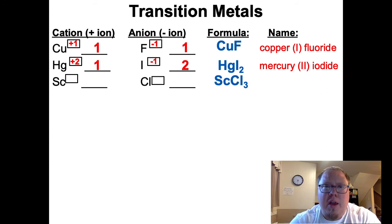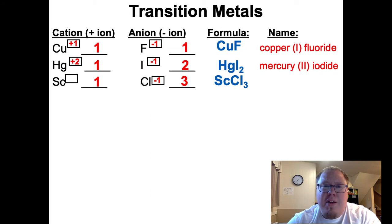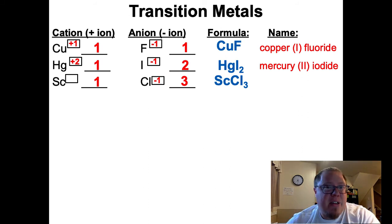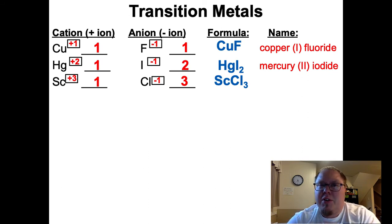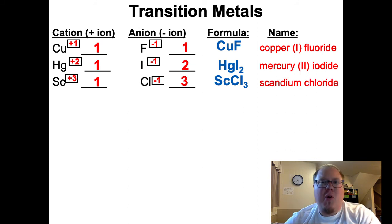Scandium chloride - ScCl3. It's a 1 to 3 ratio. Chlorine is negative 1. Based on looking at this, that should be a positive 3 charge. But here's the trick - scandium is one of those four exceptions I just mentioned: silver, scandium, zinc, and cadmium. Scandium is one of those exceptions, so we're not going to include the Roman numeral here. We just call it scandium chloride. Don't you just love exceptions - they make things so much easier.